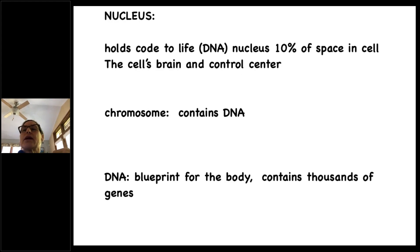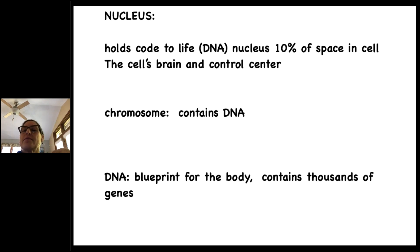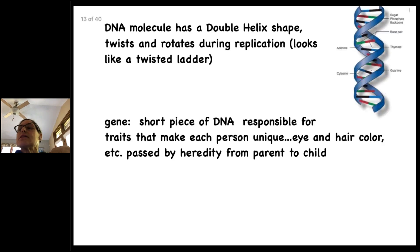Osmosis is water molecules moving from concentrated to less concentrated areas. The nucleus takes up about 10% of the space in the cell. Chromosomes contain DNA. DNA is the blueprint for the body and contains thousands of genes. You might have seen a picture of DNA — the molecule has a double helix shape. It twists and rotates during replication, when it's dividing and making copies of itself. It looks like a twisted ladder.